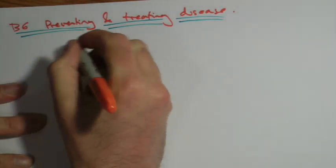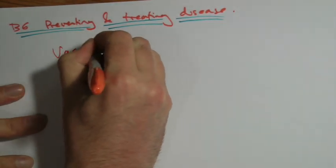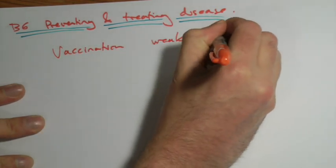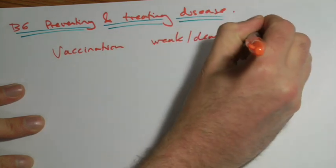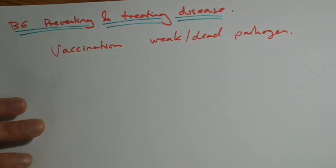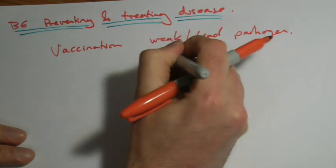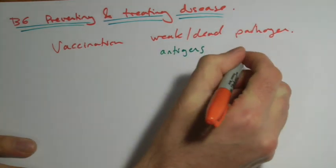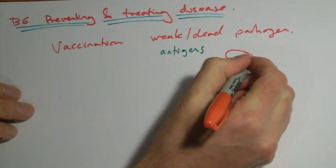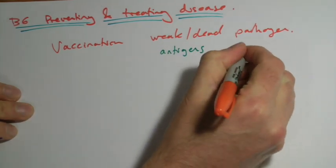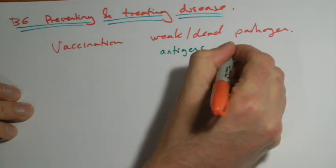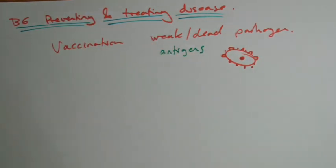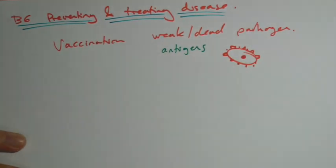First thing to consider is vaccination, and this is where you introduce either a weak or dead form of the pathogen into the body, and you let the immune system respond to it. The key to this is the presence of antigens. Antigens are simply, if we've got some kind of cell, they're shapes on the outside of cells we don't normally draw them in, but they're there, chemical shapes on the outside, and your immune system can recognize them.